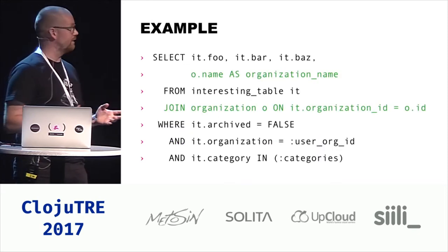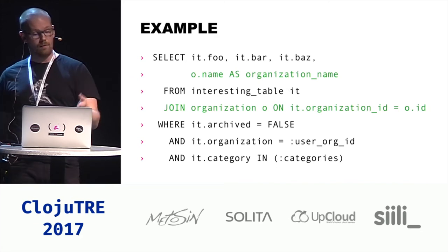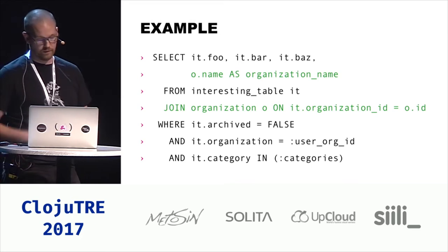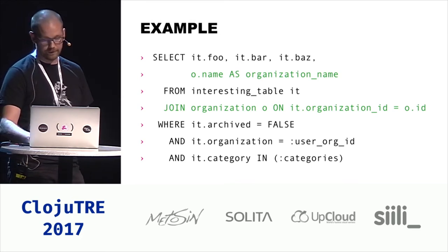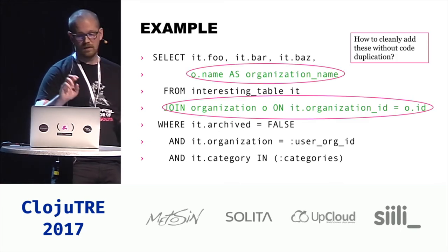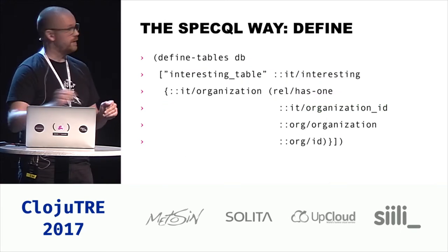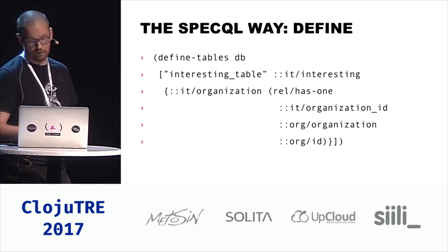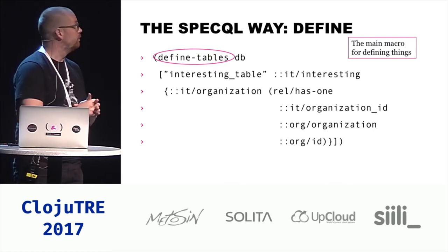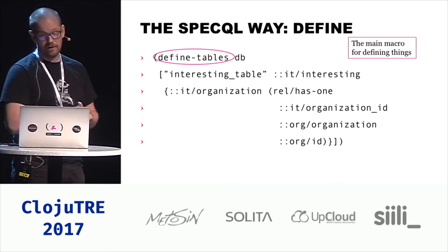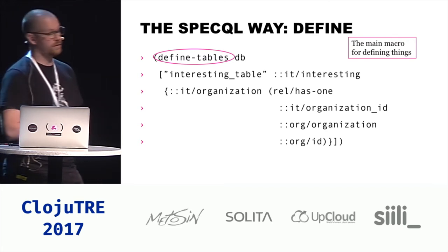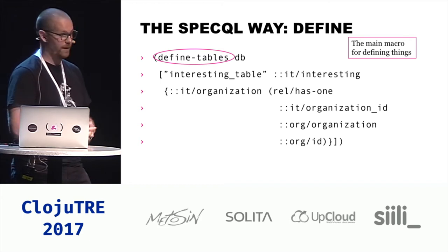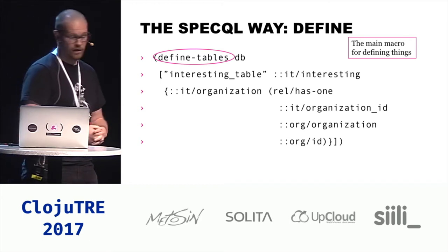And that example wasn't even talking about joins — so this is almost exactly the same query, except in SQL we have to join another table to get another column to be part of it. How do we do this in SpecQL? The main thing is the DefineTables macro. Now this is a pretty large macro, and it requires a database connection at compile time — that's a caveat — but you should have a test database at compile time for your specs and unit tests as well, so you already have that.